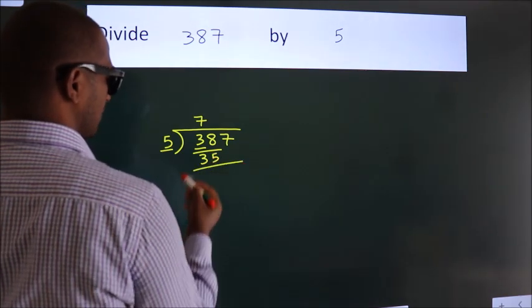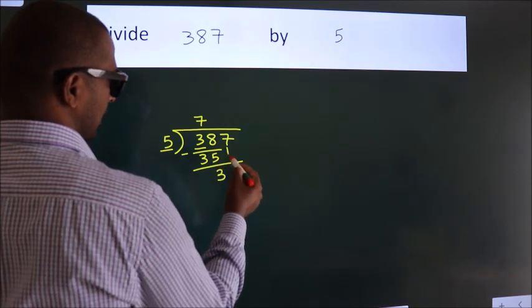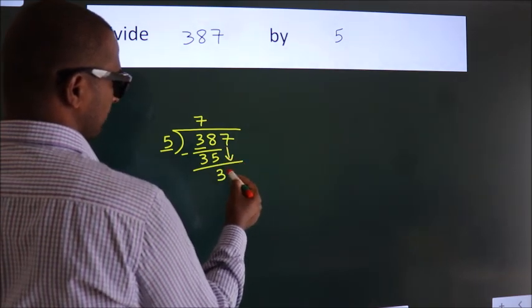Now we should subtract. We get 3. After this, bring down the beside number. So 7 down.